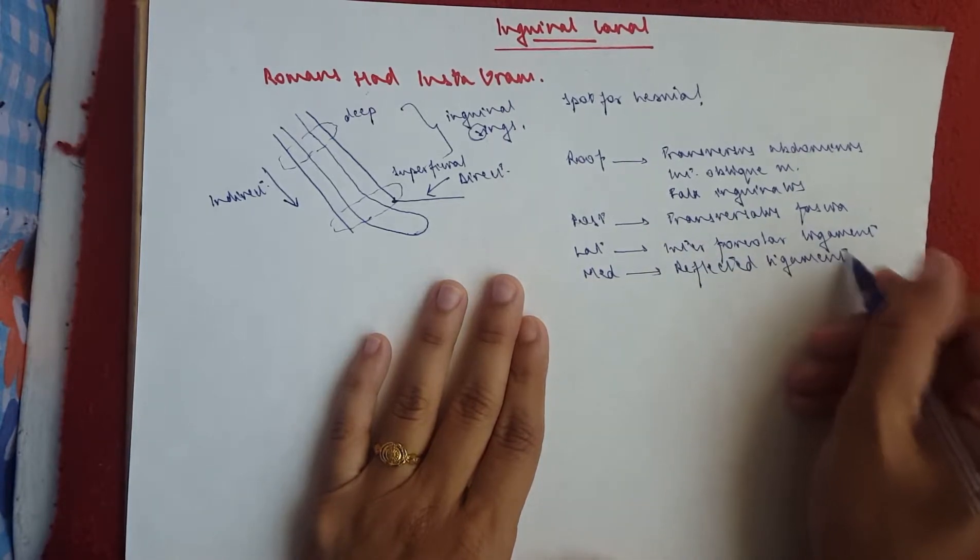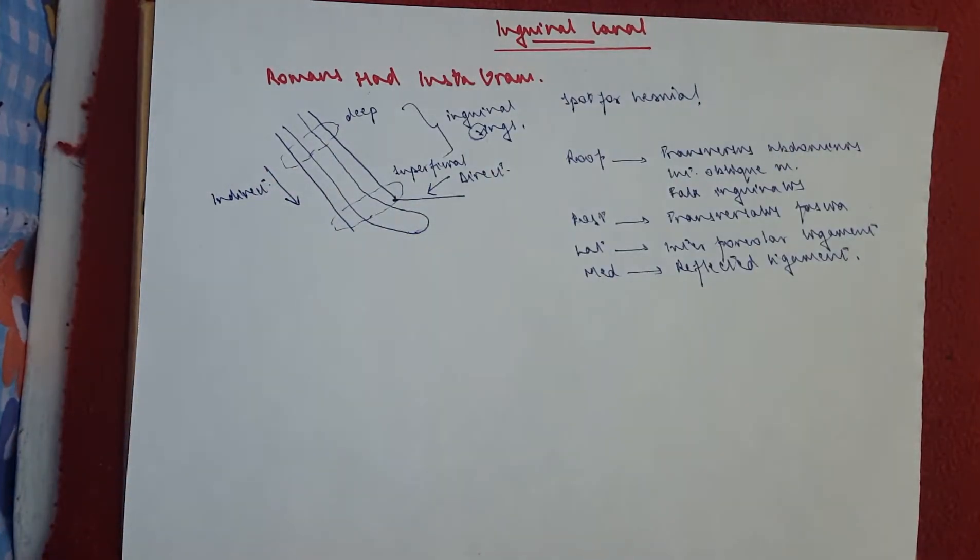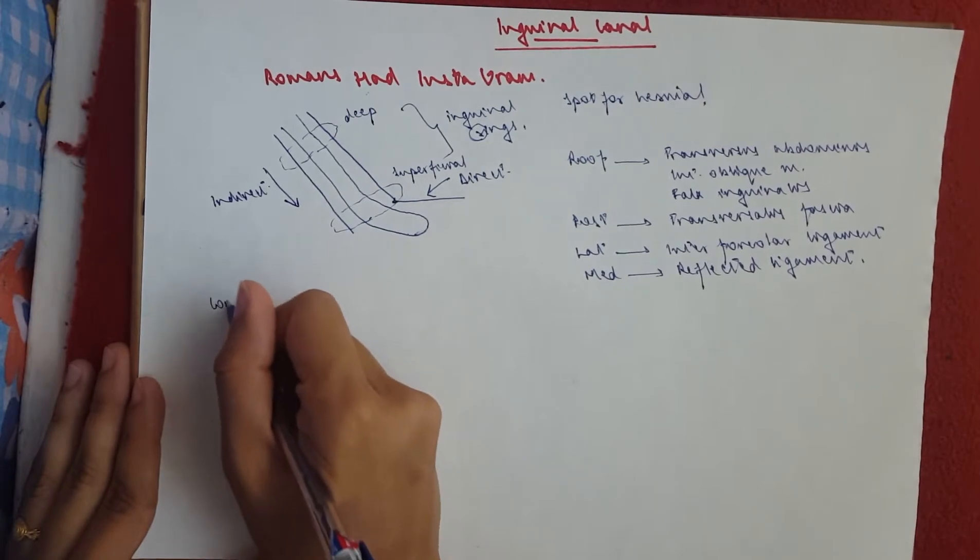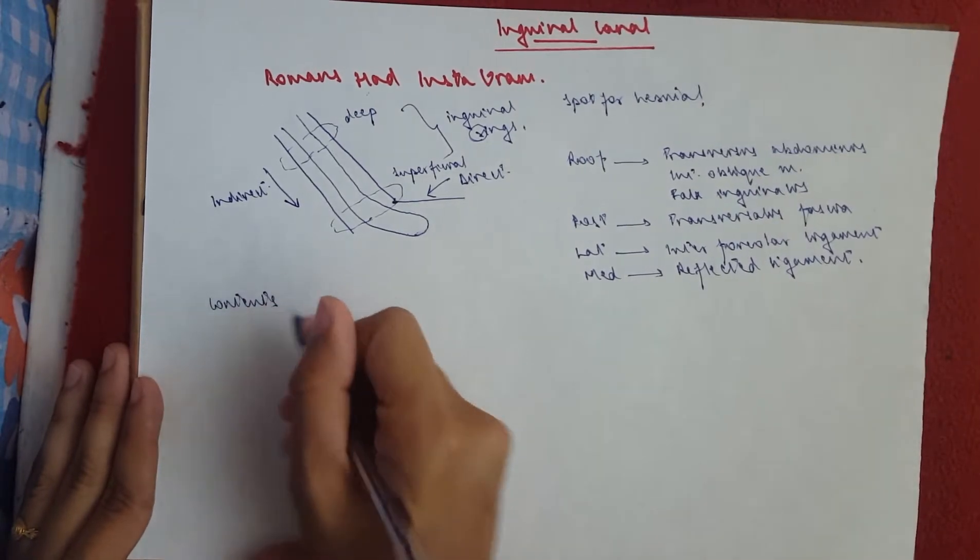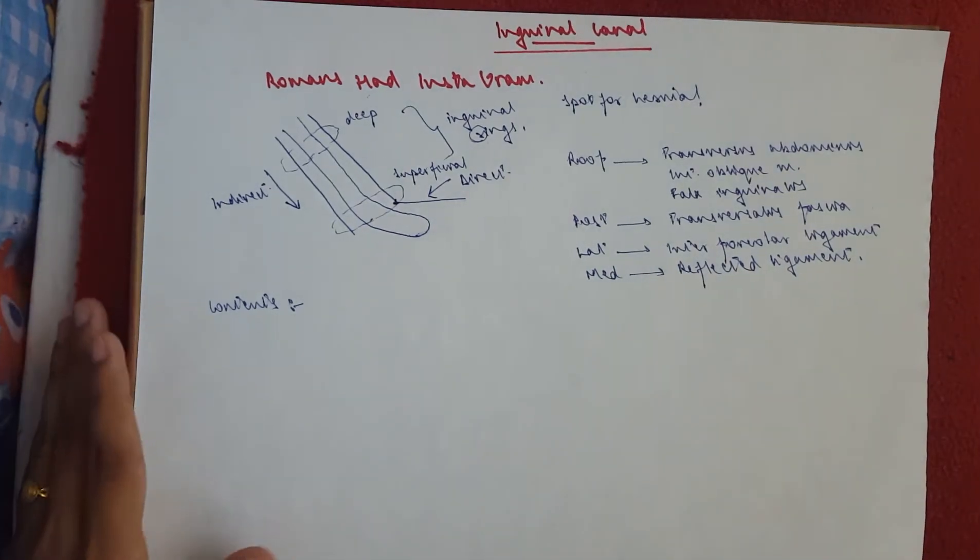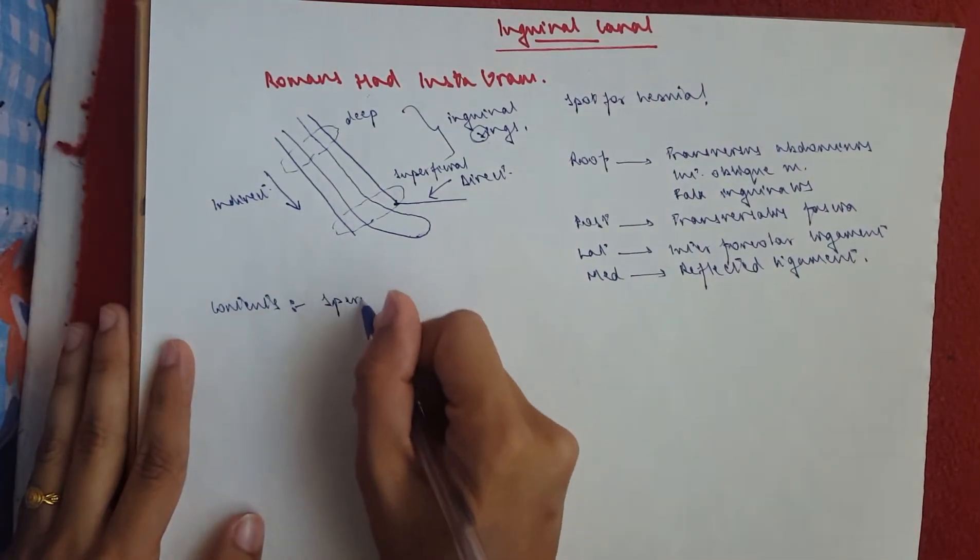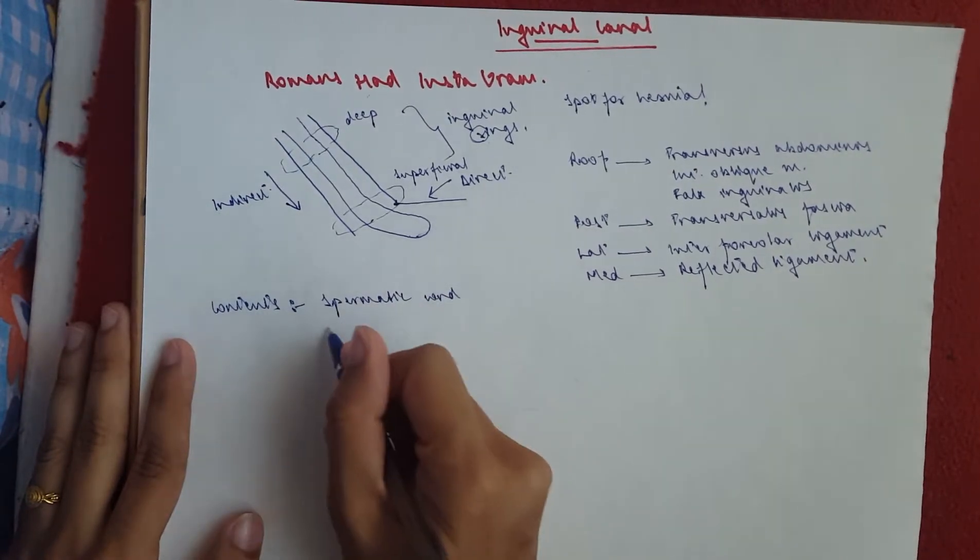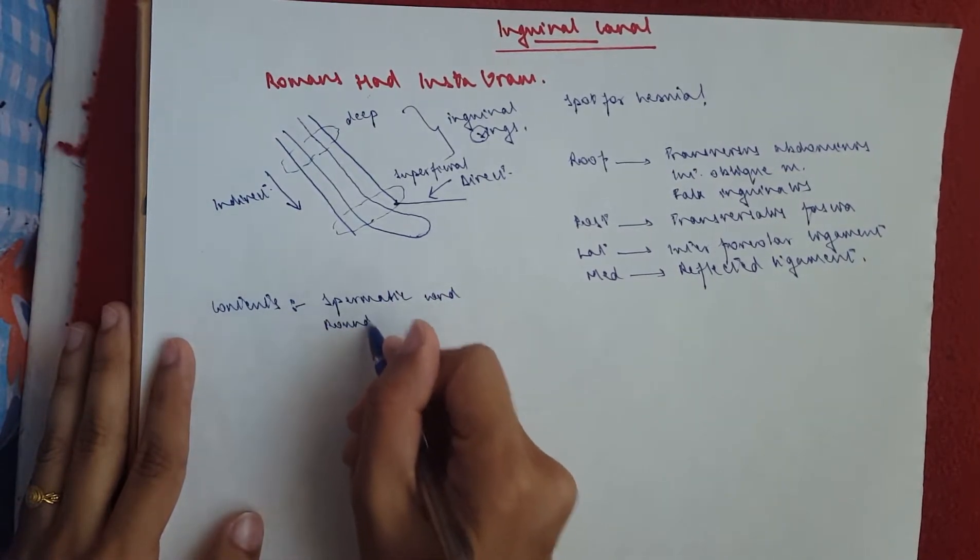Okay, now we move on to the rest of our Instagram mnemonic, which shows the contents. Now, I haven't included two things in the mnemonic, just because it's different for males and for females. For example, males have the spermatic cord going through the inguinal canal and while females have the round ligament of the uterus going through this.